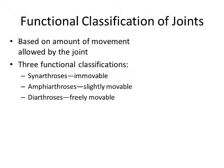Diarthroses are the joints where plenty of movement — a lot of movement — occurs. For example, your shoulder joint, elbow joint, and knee joint. In those joints, plenty of movement occurs. So those are diarthroses. These are three types based on the amount of movement: no movement, small amount of movement, and a lot of movement.